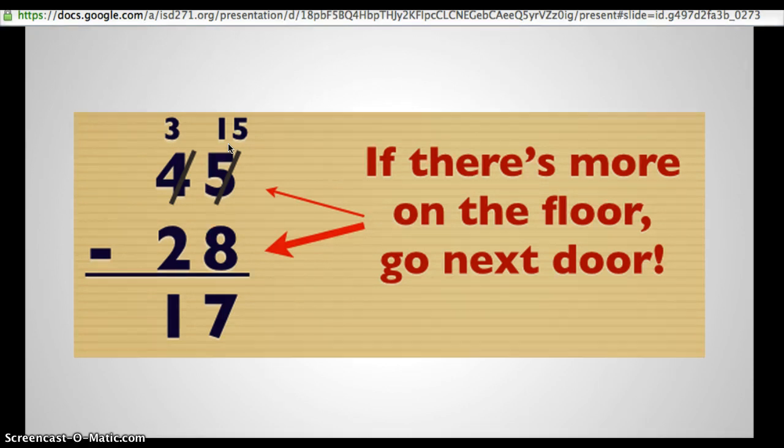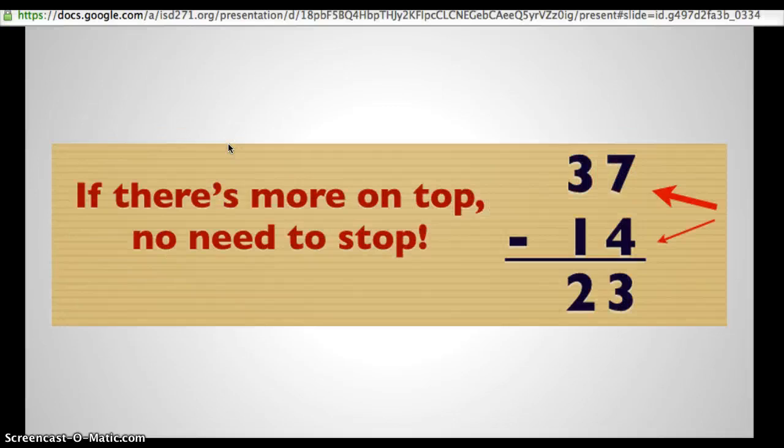But be careful. Don't get carried away with trading numbers, because you don't always need to. So the second part of the rhyme says, if there's more on top, no need to stop. In this situation, we have thirty-seven minus fourteen. Seven is the number on top, and there's more on top. So there's no need to stop. We don't need to do any trading in this situation. The same happens over here. We have three tens minus one, and we can just do a three minus one to get two.